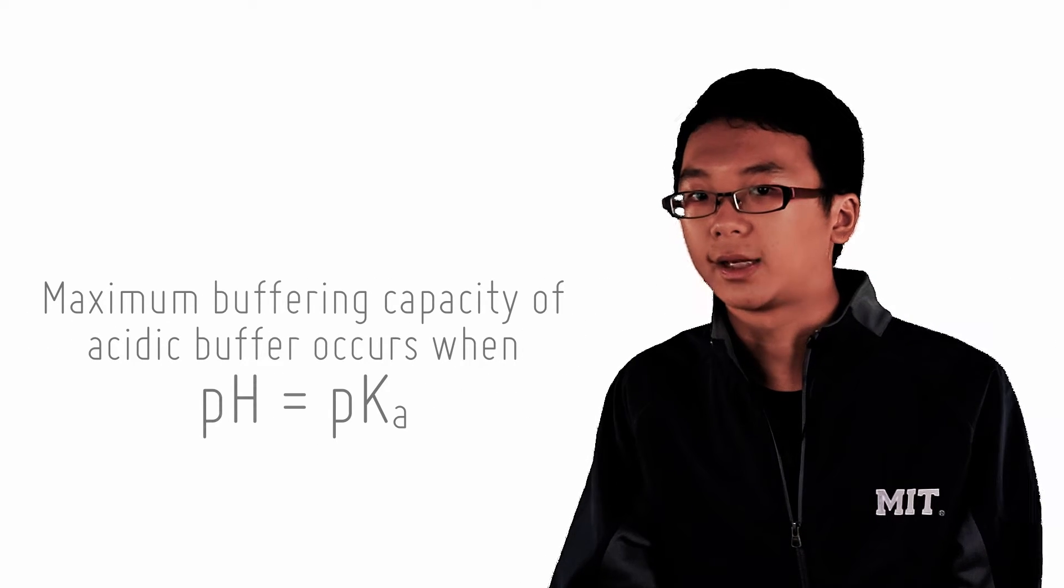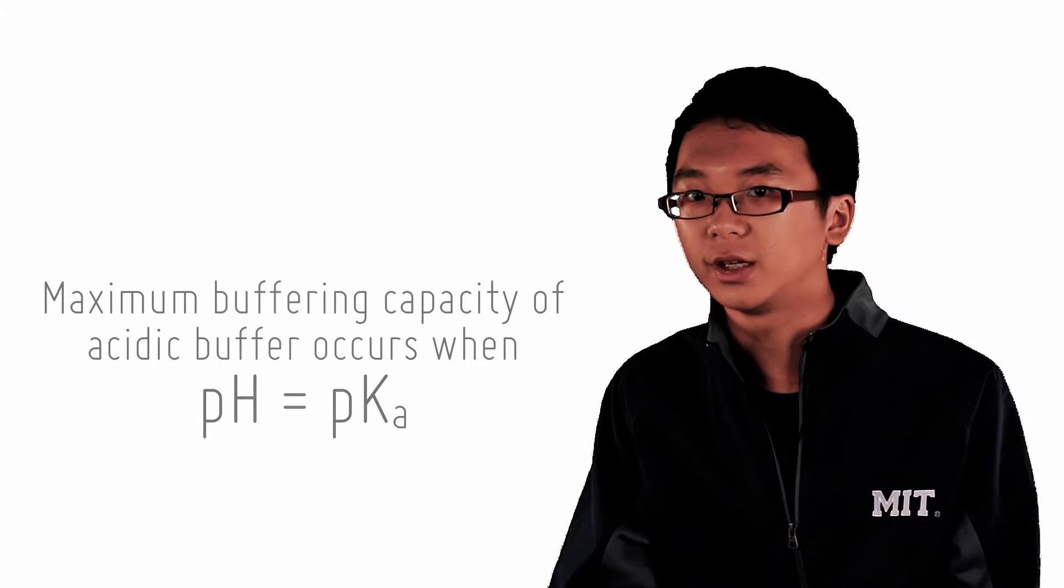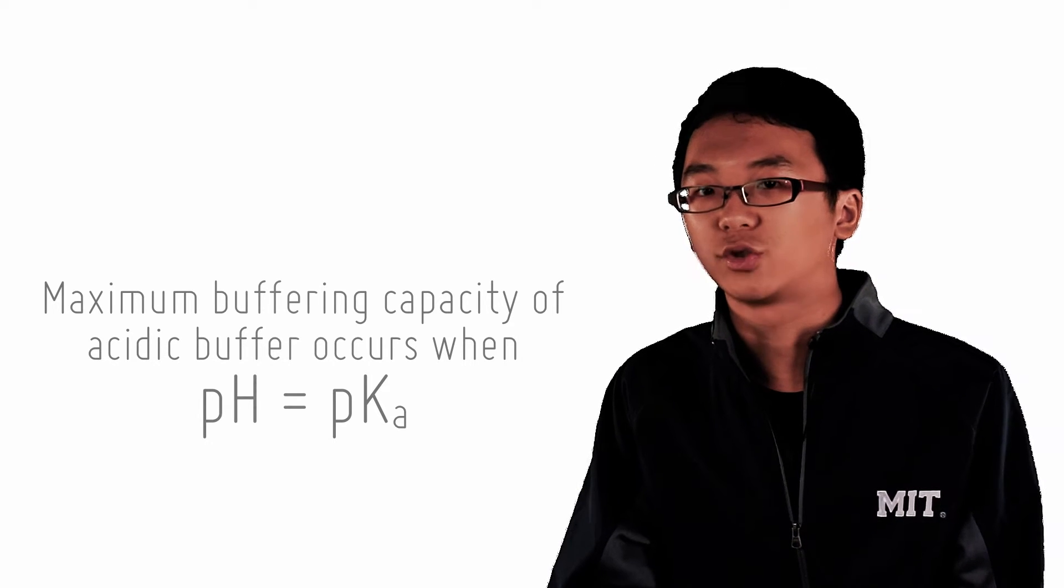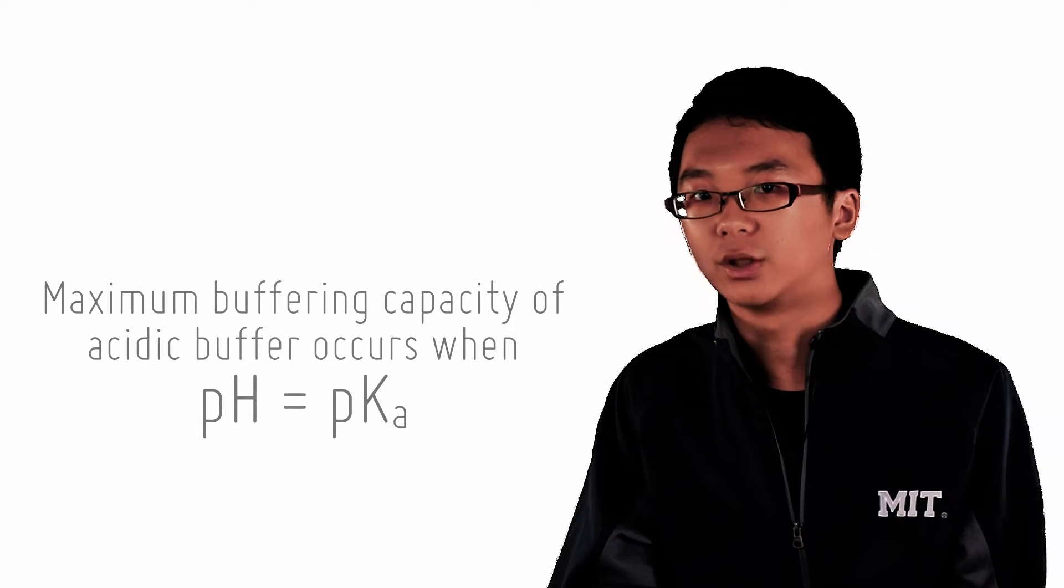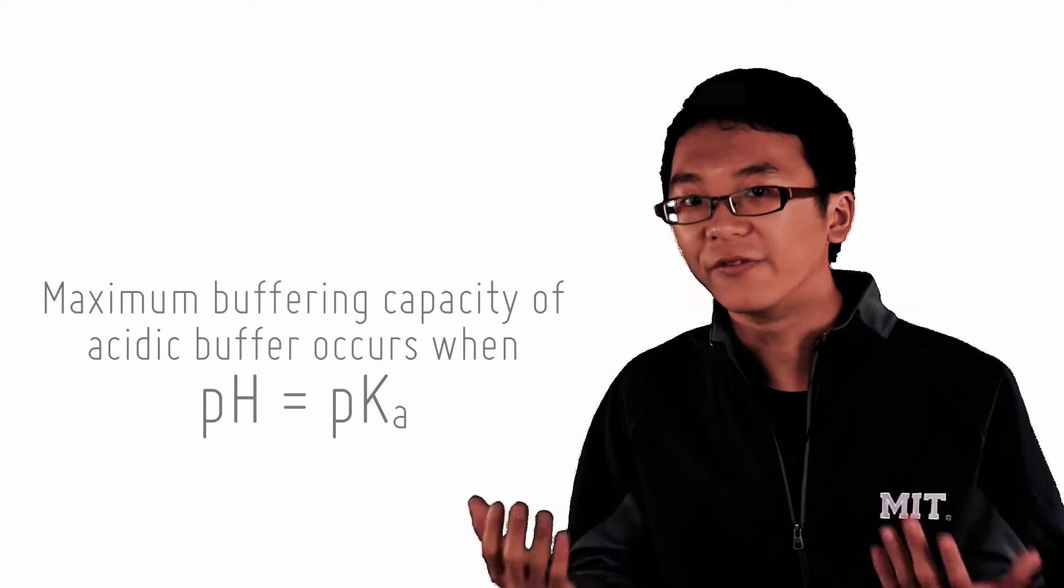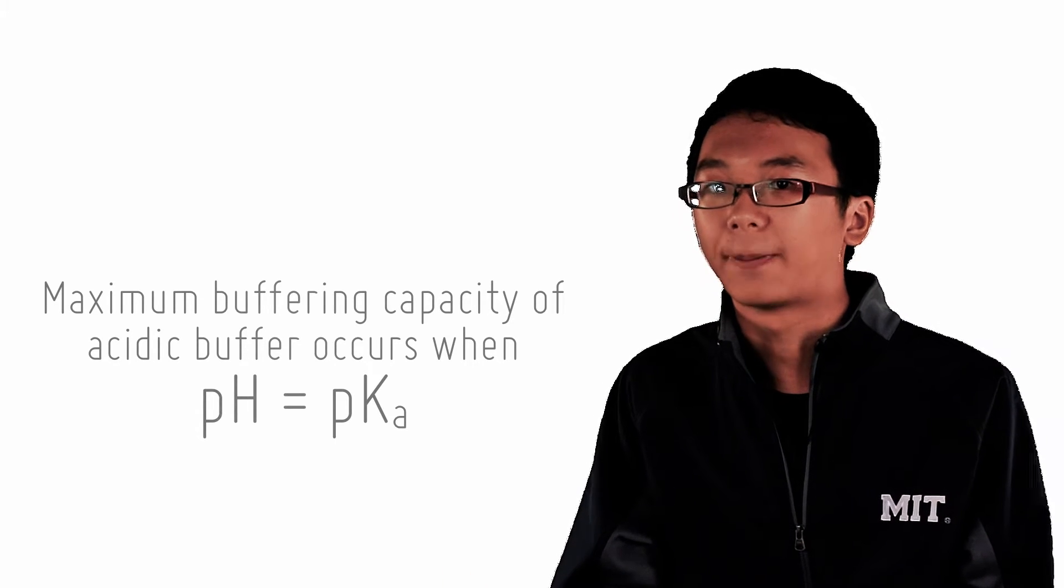So for any acidic buffer, if it is to absorb the most acid and base without significant change to pH, then we must adjust the concentration of acid and salt to make them equal and this brings the pH to pKa. Or conversely, if pH is at pKa, then the buffer is at the maximum buffering capacity.